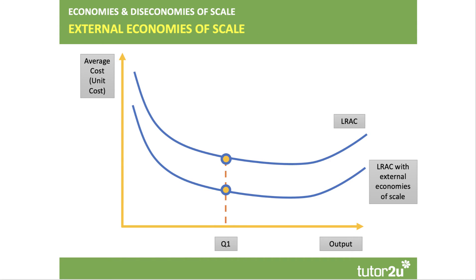External economies of scale are increasingly coming up on exam questions. An external economy of scale is available, in theory, to all firms in an industry. What it does is drag down the unit costs of production across the board, causing a downward shift in the long-run average cost curve.